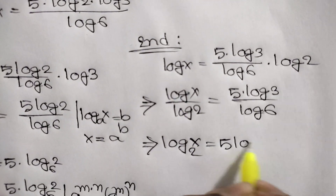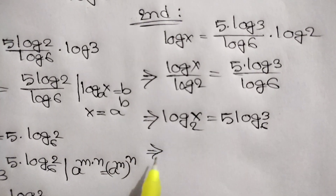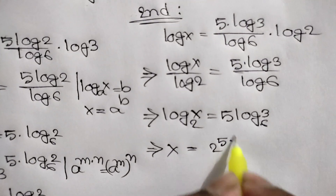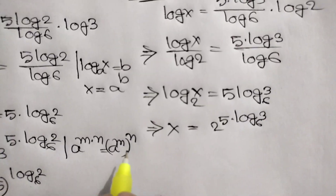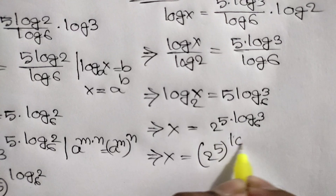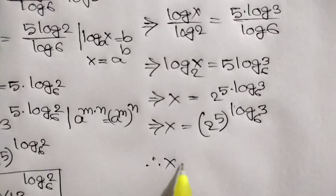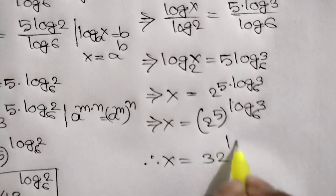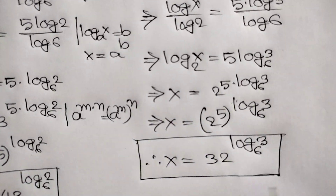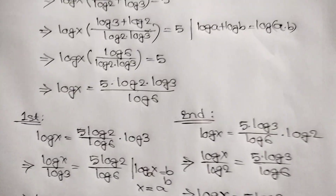So x is equal to 2 to the power 5 times log of 3 base 6, which gives x is equal to 32 to the power log of 3 base 6. This is our final answer. Thanks for watching — if you like this video please subscribe to my channel, and see you in the next video, bye bye.